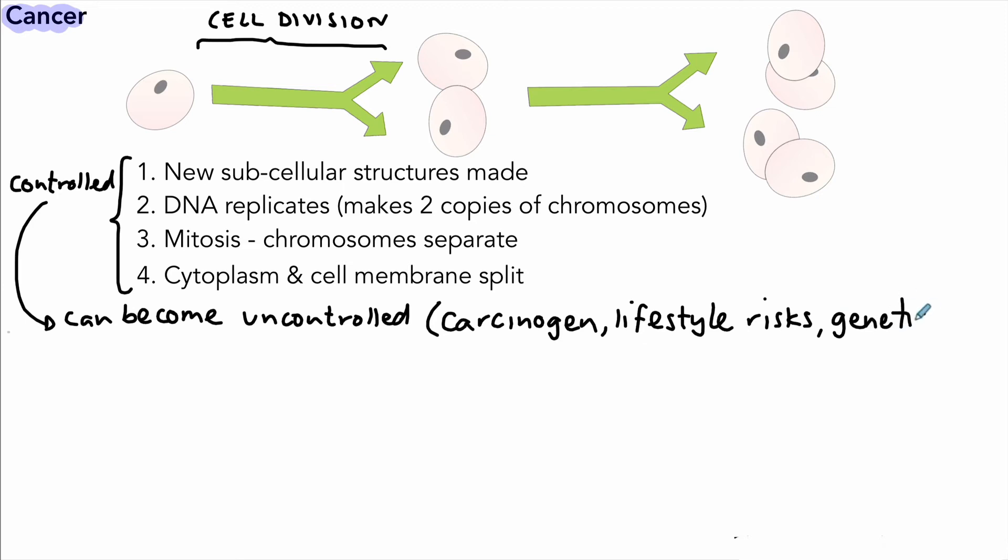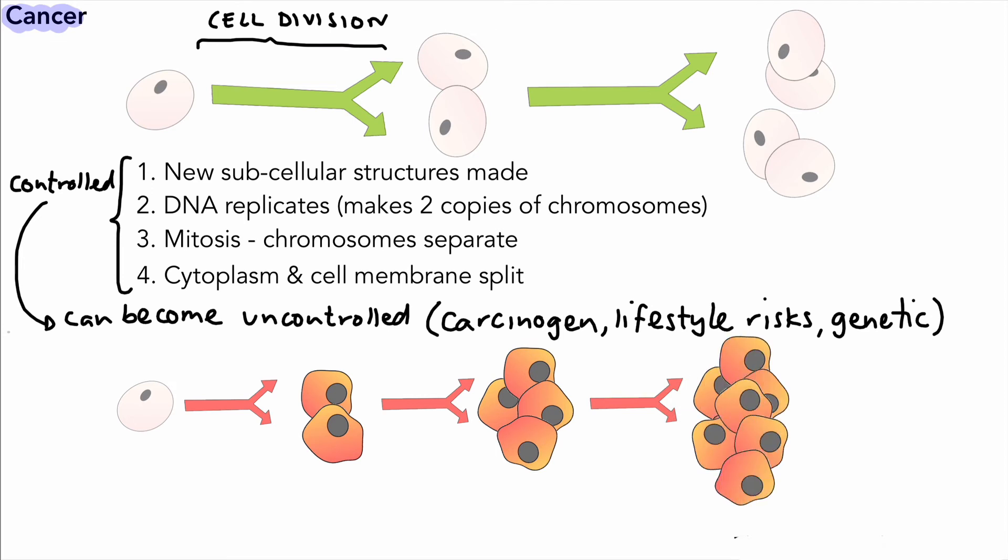And also it could be genetic as well. So there's various reasons why this process can become uncontrolled. And when it does, what we get is the cell dividing very rapidly and in an uncontrolled way and producing abnormal cells. And these abnormal cells or this group of abnormal cells is called a tumor.